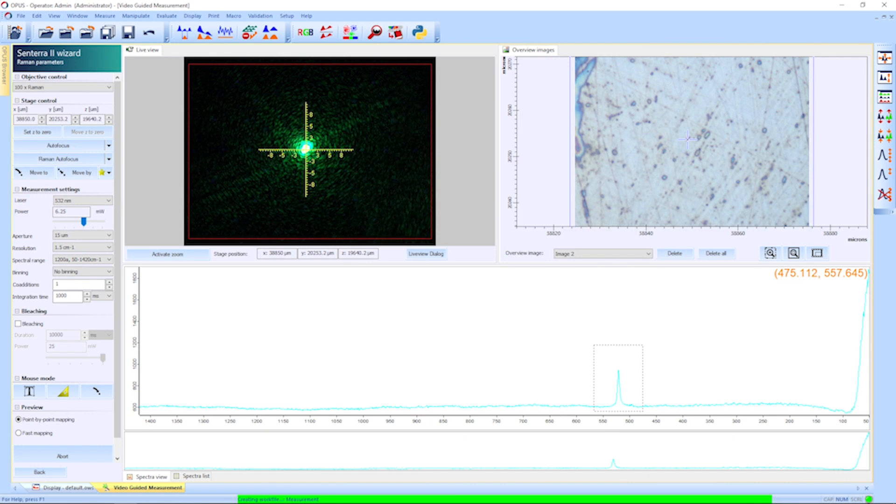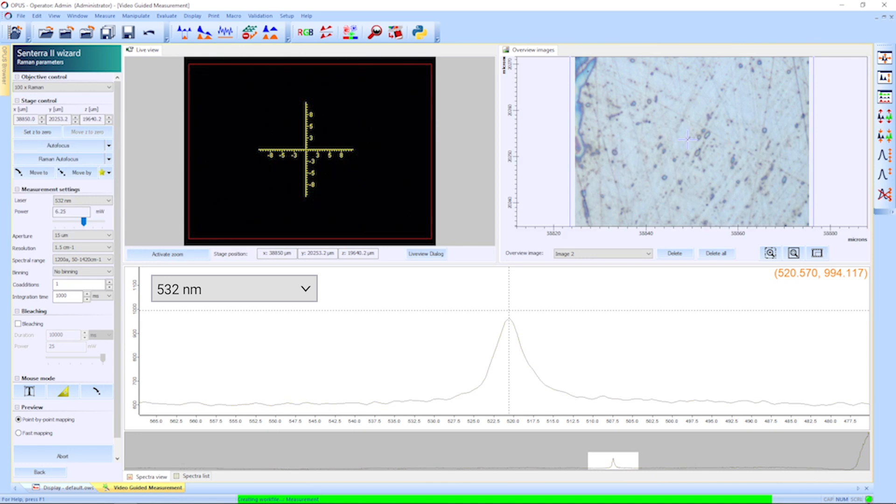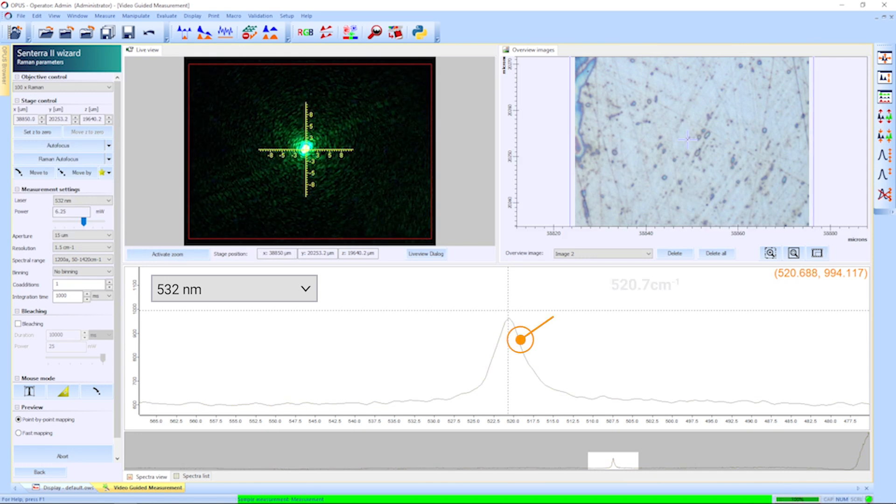This is a live spectrum by using a 532 nanometer laser. The Raman peak for silicon appears at a Raman shift of 520.7 wavenumber.